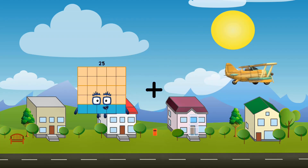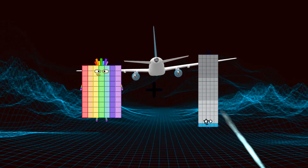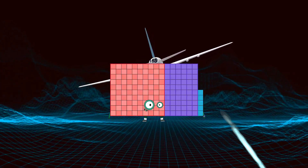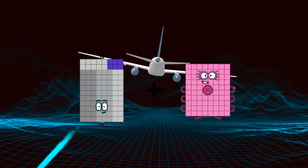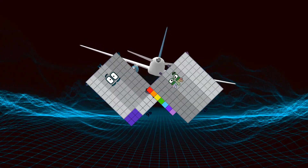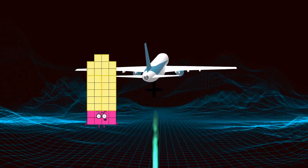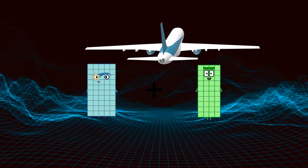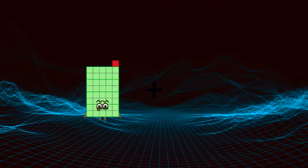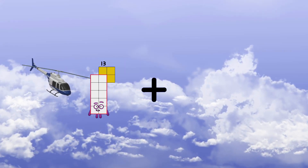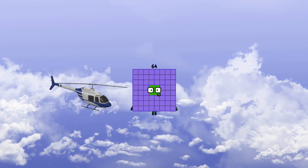70 plus 95 equals 165. 96 plus 97 equals 193. 50 plus 20 equals 70. 13 plus 51 equals 64.